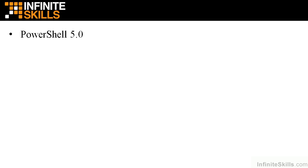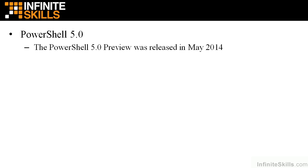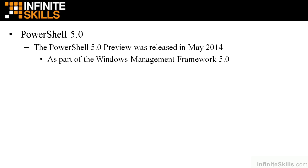PowerShell 5.0 is very soon going to be the latest version. As of this video, it's in preview mode — there was a release in April, an update in May, and it's part of the Windows Management Framework 5.0. Keep in mind, PowerShell is always part of the Windows Management Framework — PowerShell 2.0 was part of WMF 2.0, PowerShell 3.0 was part of WMF 3.0, and so on. The way to get a different version of PowerShell than what came pre-installed is to download the appropriate Windows Management Framework, which we'll cover when we talk about installing PowerShell.